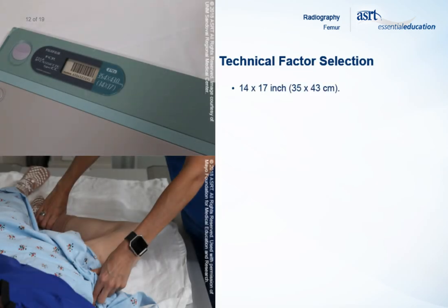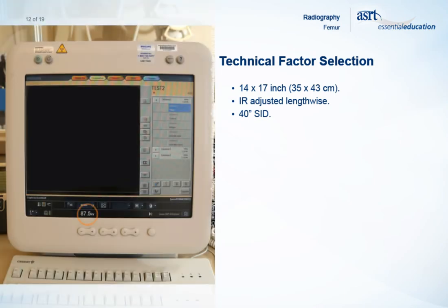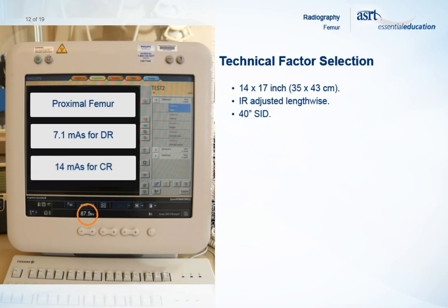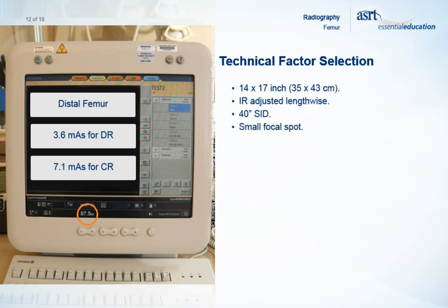A 14 by 17 inch or 35 by 43 centimeter image receptor is used for a lateral projection of the femur and is adjusted lengthwise. The SID is set at a minimum of 40 inches, although some departments may require a longer SID. Collimation is adjusted to 1 inch or 2.5 centimeters on both sides of the leg and remains at 17 inches or 43 centimeters in length. 87.5 kVp is a common setting for lateral projections, and generally a grid is used. Automatic exposure control may be used to achieve the proper mAs setting. However, common mAs settings for a proximal femur projection are 7.1 mAs when using digital radiography and 14 mAs when using computed radiography. Common settings for a distal femur projection are 3.6 mAs for digital radiography and 7.1 mAs for computed radiography. A small focal spot is selected with all settings.